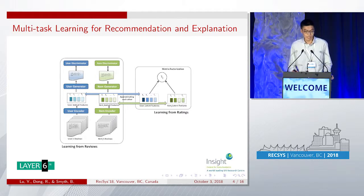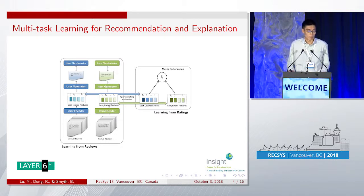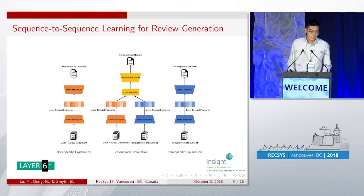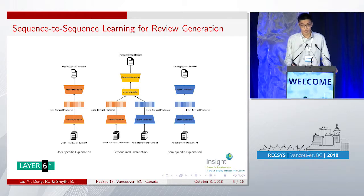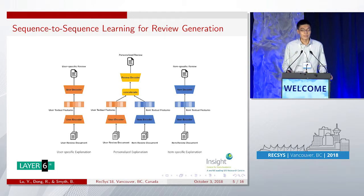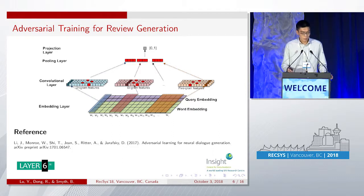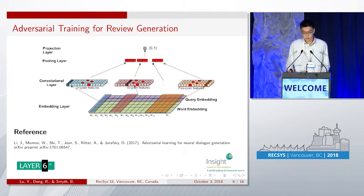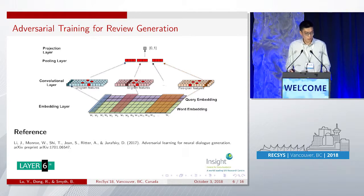We're going to describe a multitask learning method that combines matrix factorization for recommendation and sequence-to-sequence learning for explanation. While conventional approaches typically generate explanations and recommendations independently, the benefits of employing a multitask learning setting are twofold. Firstly, the sequence-to-sequence model is augmented by the user preferences and product features learned by matrix factorization, and thus can generate more personalized explanations. Secondly, jointly training matrix factorization and the sequence-to-sequence model enforces consistency between the generated explanation and the provided recommendation.